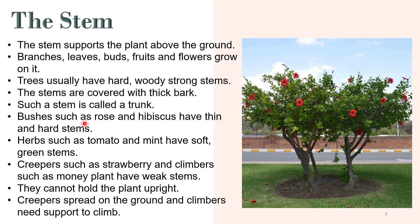Bushes such as rose and hibiscus have thin and hard stems. Herbs such as tomato and mint have soft green stems. Creepers such as strawberry and climbers such as money plant have weak stems — they cannot hold the plant upright. Creepers spread on the ground and climbers need support to climb.